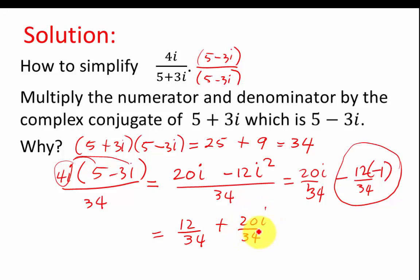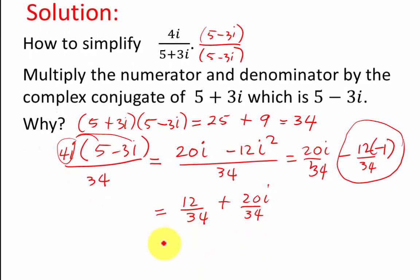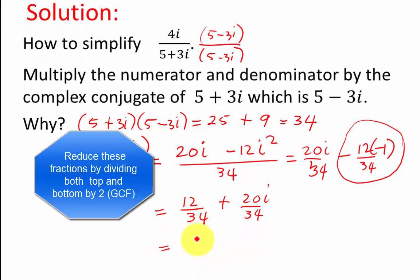Now, do you think this is the final answer? Well, we've got to simplify first, and reduce this into its lowest fraction, so divide both the top and bottom by 2, so that becomes 6 over 17, plus divide by 2, 10 over 17i, and that gives you the final answer to this problem.